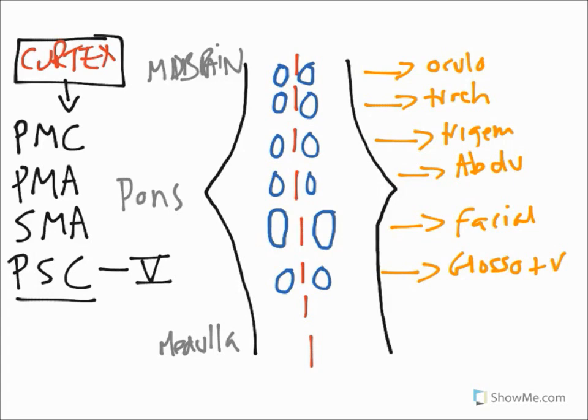We're down in the medulla now. We've got our accessory down here and we've got our hypoglossal as well. So let's label those.